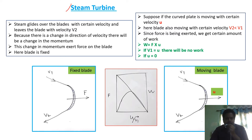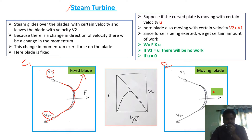We are going to consider two cases. In Case 1, as you can see, this is the turbine blade which is fixed — it will not move. When steam with velocity V1 passes over the turbine blade and leaves with velocity V2, since there is a change in the direction of velocity, there will be momentum. This momentum exerts force F on the blade.